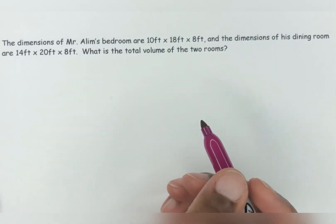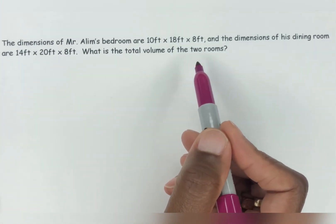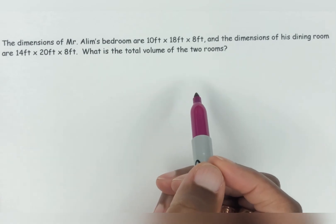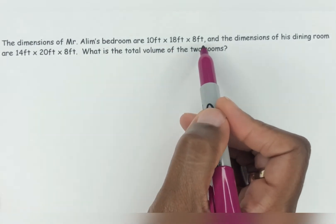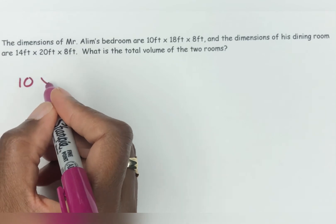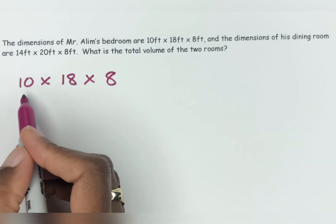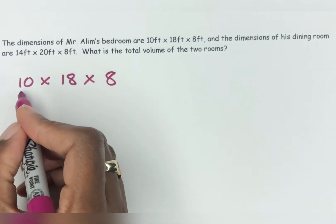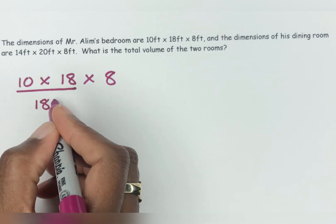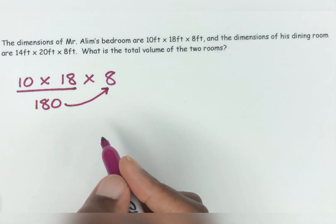This last question is really quick — let's take a quick read. The dimensions of Mr. Aleem's bedroom are 10 feet by 18 feet by 8 feet, and the dimensions of his dining room are 14 feet by 20 feet by 8 feet. What is the total volume of the two rooms? Basically you need to calculate the volume of each room and then add the two answers together. For the bedroom: 10 times 18 — anything multiplied by 10, you just put a zero on it — gives you 180. And then 180 times 8 gives you 1,440.